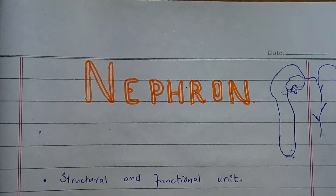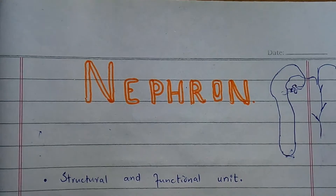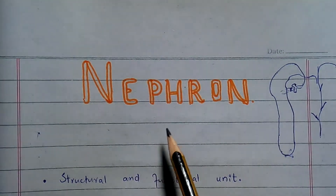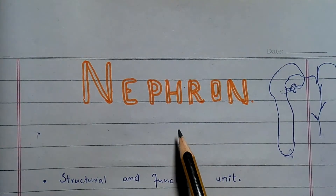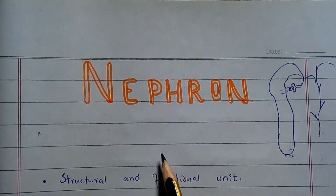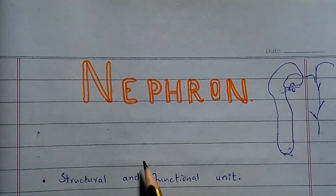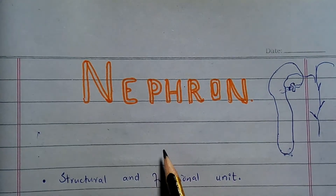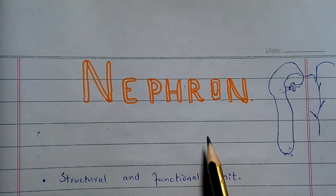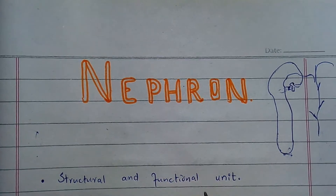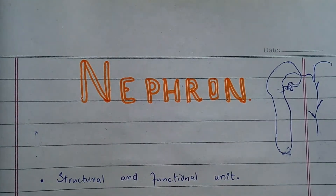Assalamualaikum students. In this video I will tell you about the physiological anatomy of the nephron — what is nephron, what are the components or parts of the nephron with the function of the nephron, and also the types of the nephron present in the kidney. So let's start.